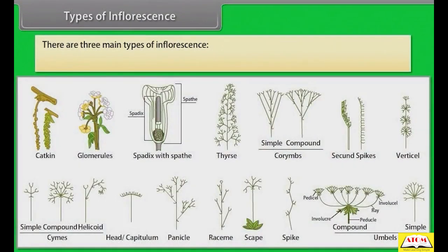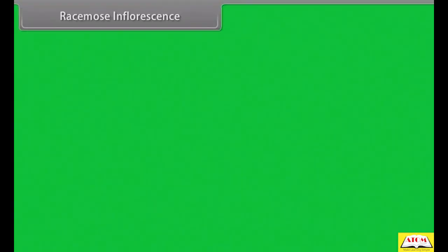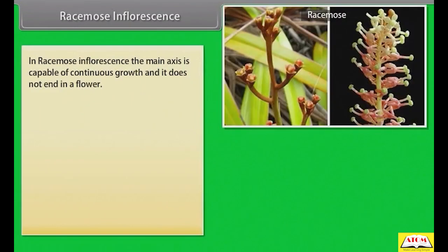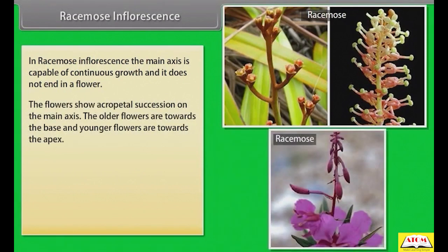There are three main types of inflorescence: racemose inflorescence, cymose inflorescence, and special types of inflorescence. In racemose inflorescence, the main axis is capable of continuous growth and it does not end in a flower. The flowers show acropetal succession on the main axis; the older flowers are towards the base and younger flowers are towards the apex.